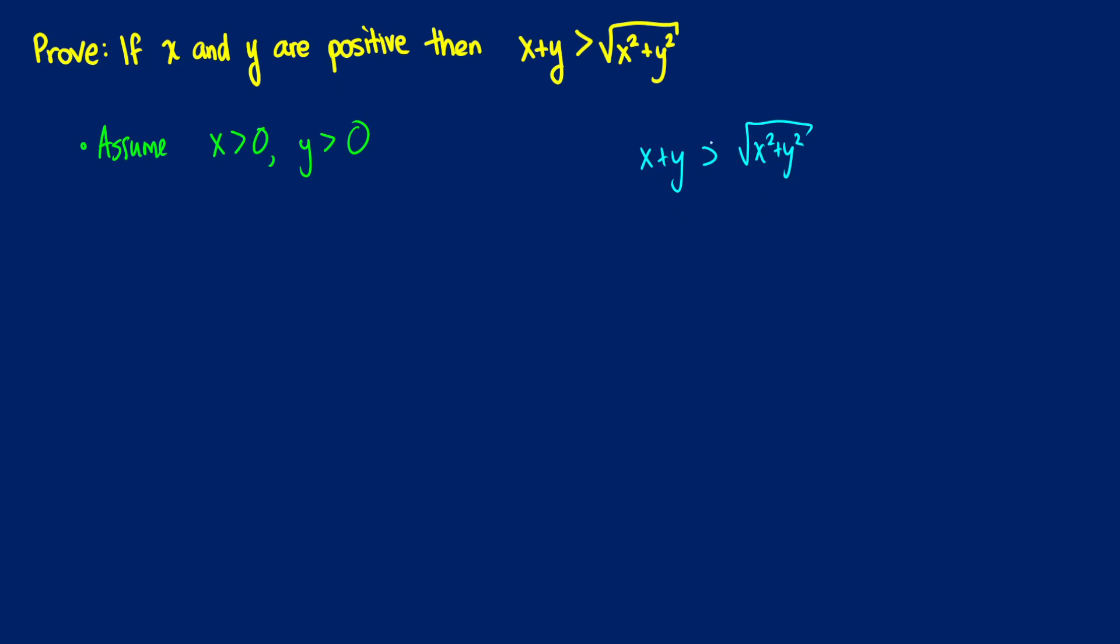So what I'm going to do is I see a square root. I'm going to square both sides so we can get rid of it, and we can at least work with something. So now x plus y squared is greater than x squared plus y squared.